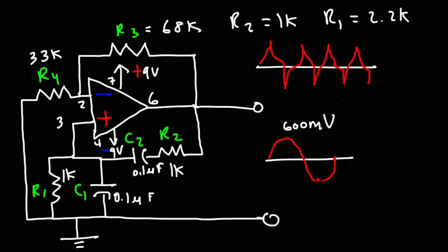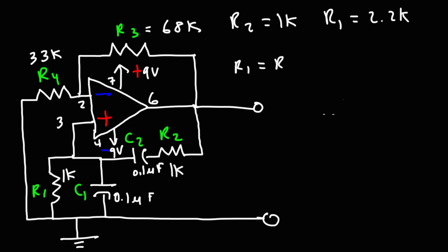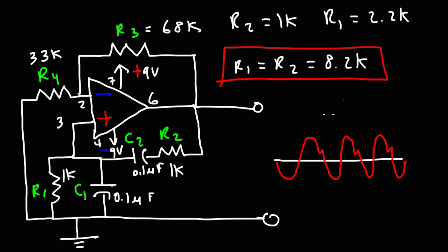Also, even if you set R1 equal to R2, you need to find the appropriate R value that corresponds to the capacitance value that you're using. Because when I used C1 and C2 as 0.1 microfarads, and I had both R1 and R2 set to 8.2 kilohms, I didn't get a nice sine wave. Instead, I got something distorted, but not necessarily like a triangular waveform. I got something that looked like this. It wasn't a perfect sine wave, but it was better than the other waveform. It appears more of a sine wave than the other spike waveform that I had before.